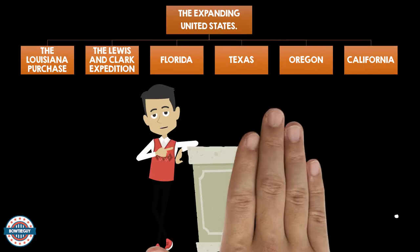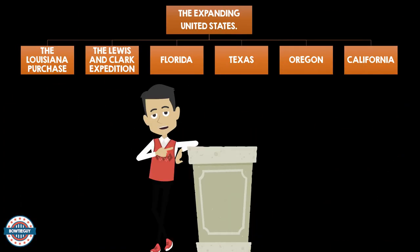So how exactly did the United States expand? Well, we have six examples we're going to talk about: the Louisiana Purchase, the Lewis and Clark Expedition, Florida, Texas, Oregon, and California.